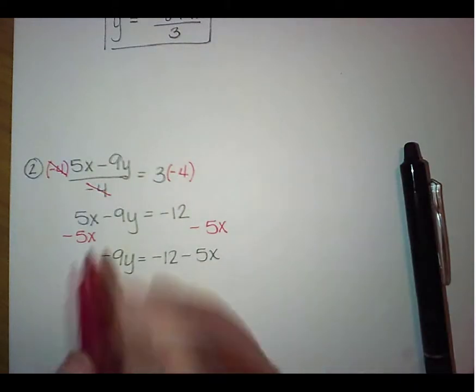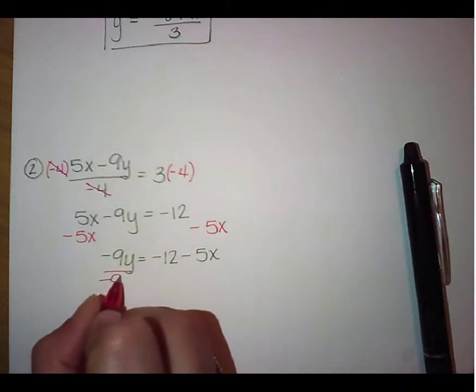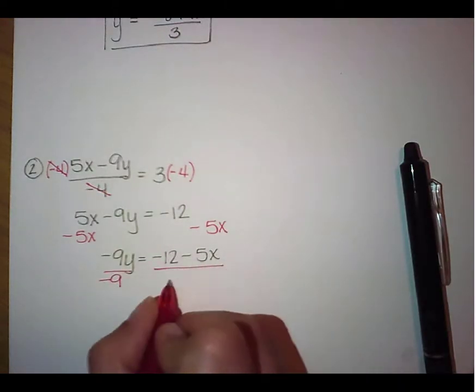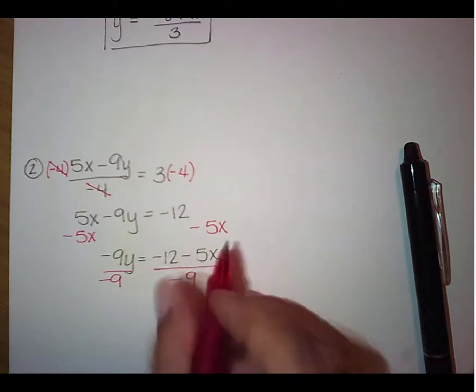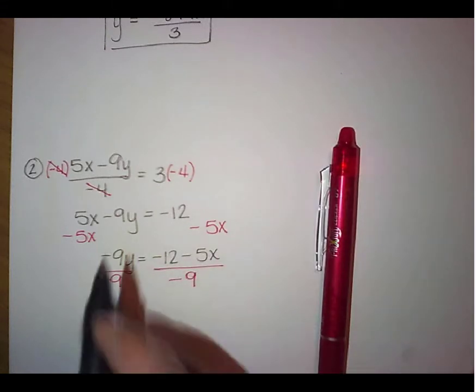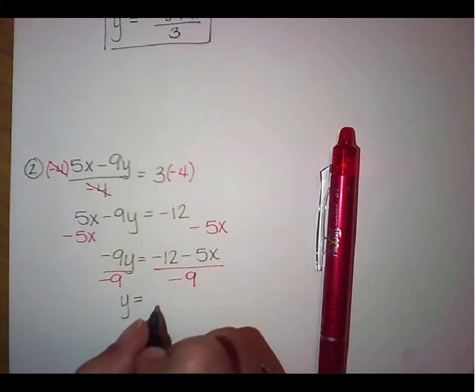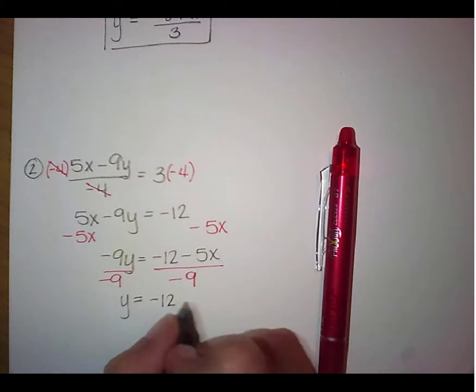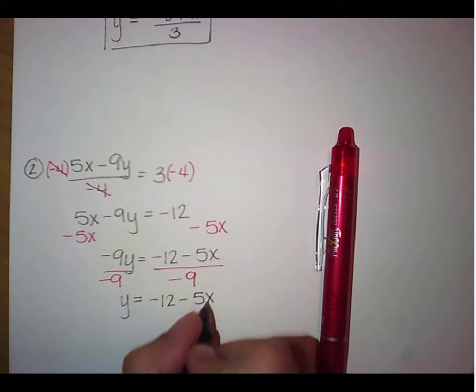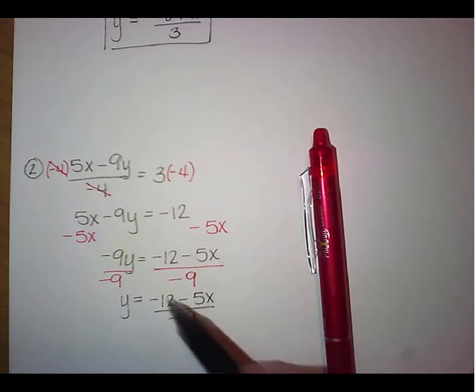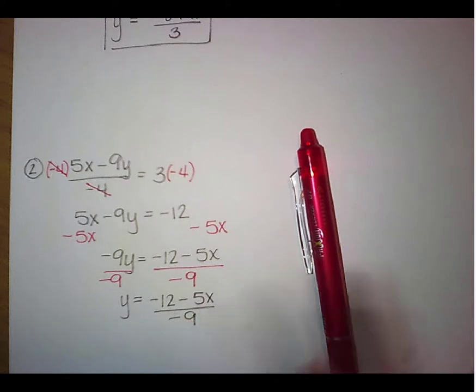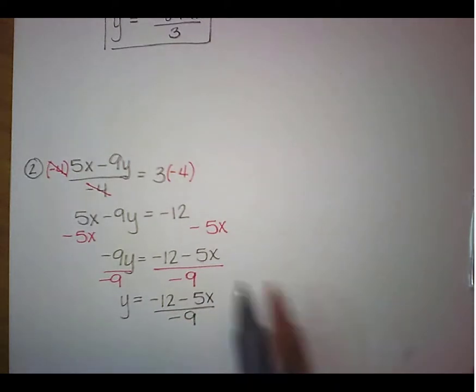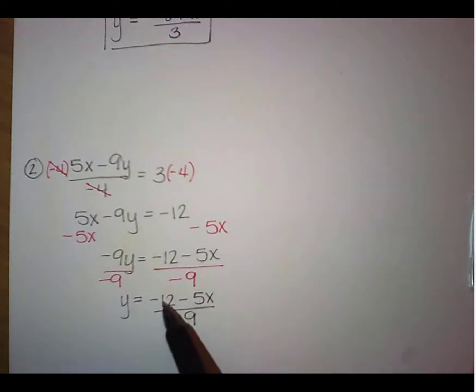And lastly we're going to divide both sides by negative 9. Again, remember we're going to divide the entire statement by negative 9. So y equals negative 12 minus 5x all divided by negative 9. We can't actually reduce any of those numbers, 12, 9, and 5. Remember it has to be in common with all three numbers in order to reduce it.